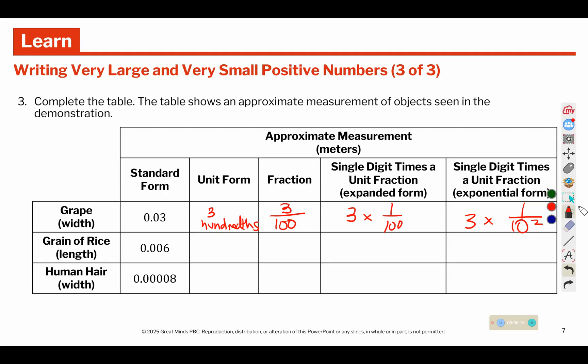The next one is 6 thousandths, 6 over 1,000, and 1,000 can be rewritten as 10 to the third power.